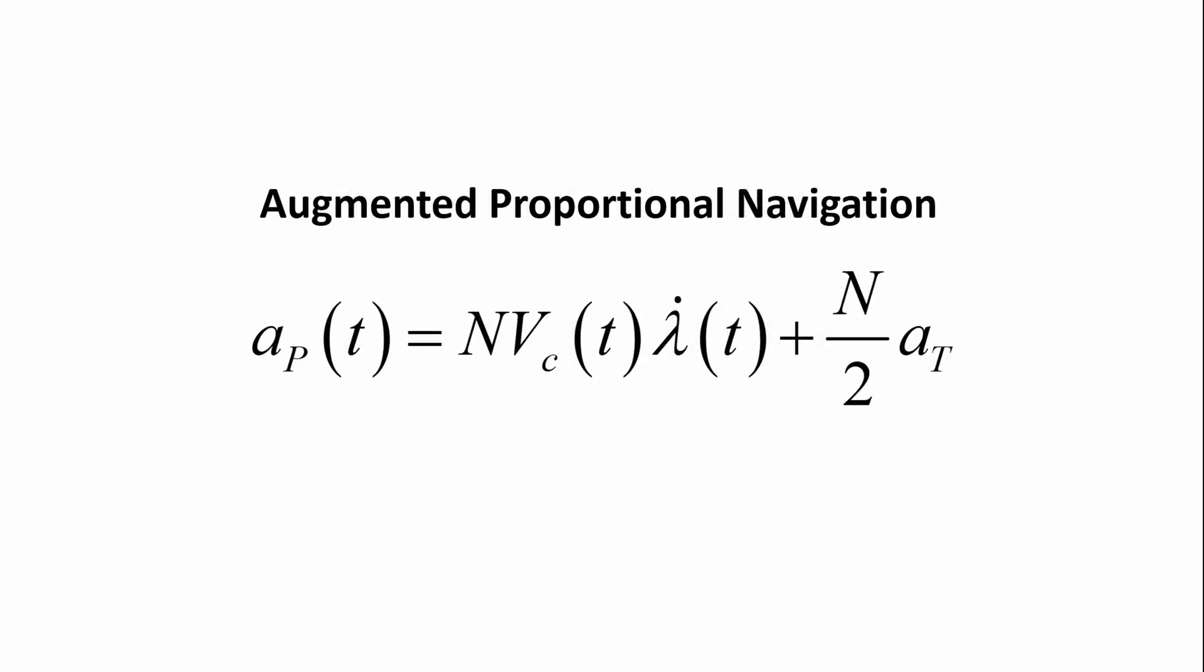Augmented proportional navigation contains a true ProNav term, but in addition, a term that has target acceleration in it. The idea is that we're inserting more information about the engagement, namely the target maneuver, for better intercept.